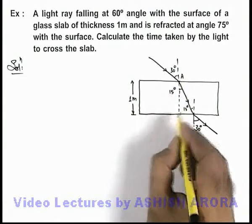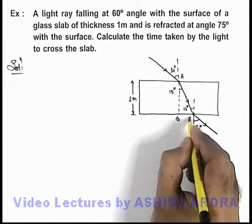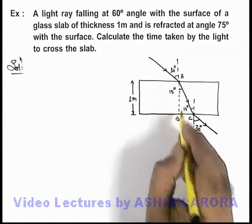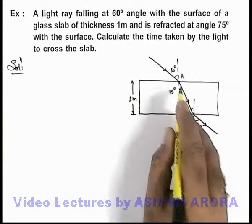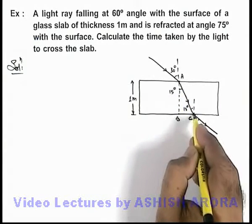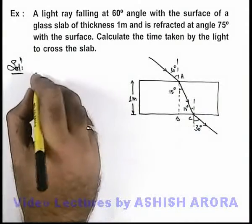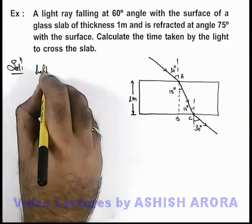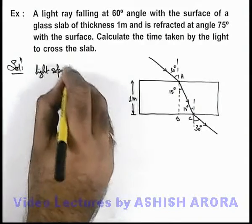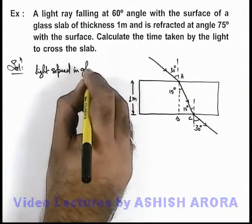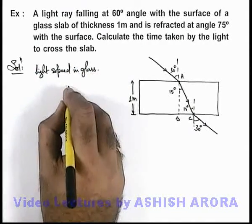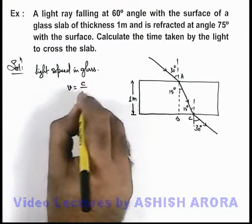If we name the points as A, B, and C, B is the point on the bottom surface of slab vertically below point A, and C is the point where light ray is emerging out. Here in this situation, if we first calculate the light speed in glass, this light speed we can calculate by c by μ.